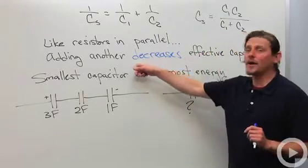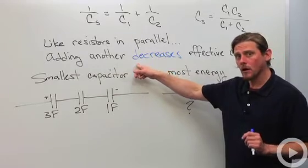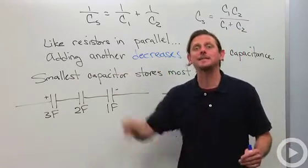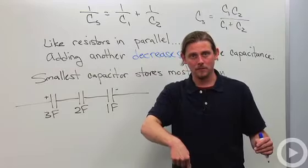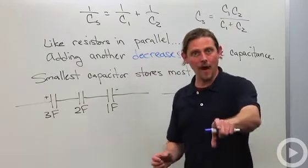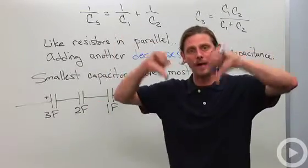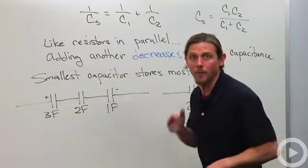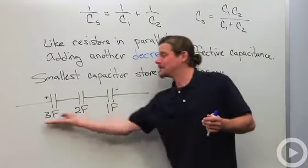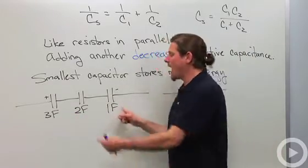Just like with resistors added in parallel, when I add another capacitor, the overall capacitance decreases. So you add another capacitor, your overall capacitance goes down, it doesn't go up.